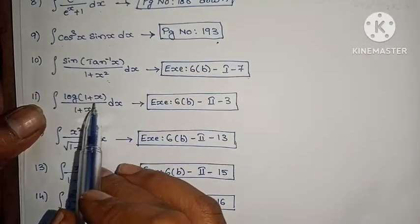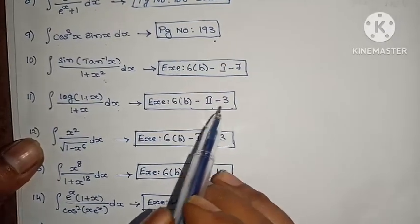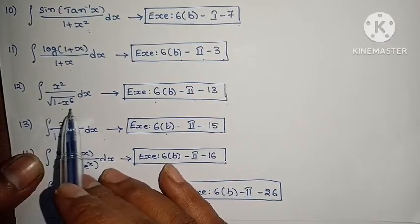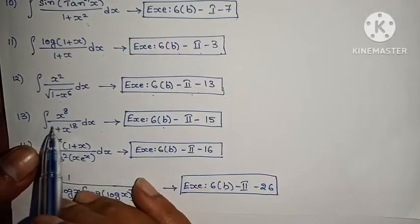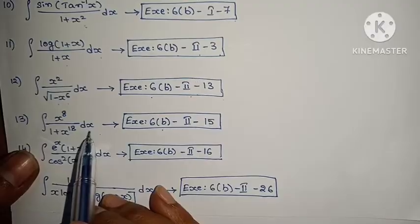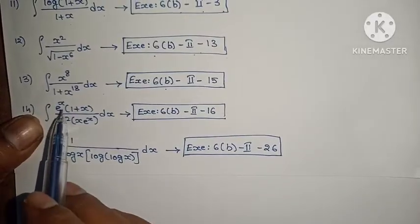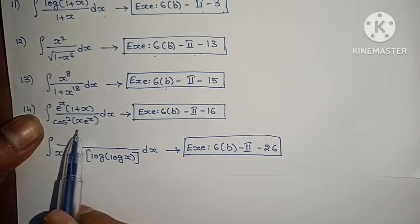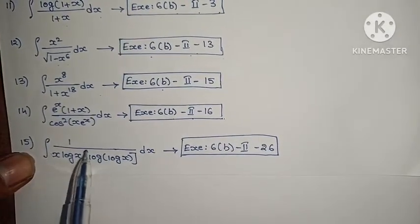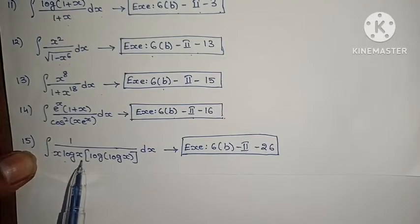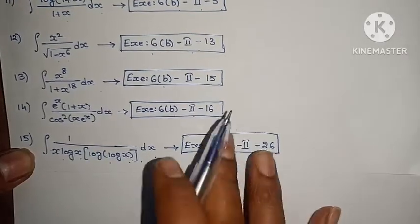Next: integral of log(1 + x)/(1 + x) dx, exercise 6b, Roman numeral 2, 3rd problem. Next: integral of x²/√(1 − x⁶) dx, exercise 6b, Roman numeral 2, 13th. Integral of x⁸/(1 + x¹⁸) dx, exercise 6b, Roman numeral 2, 15th. Next: integral of eˣ(1 + x)/cos²(x·eˣ) dx, exercise 6b, Roman numeral 2, 16th. Integral of 1/(x · log x · log(log x)) dx, exercise 6b, Roman numeral 2, 26th problem.